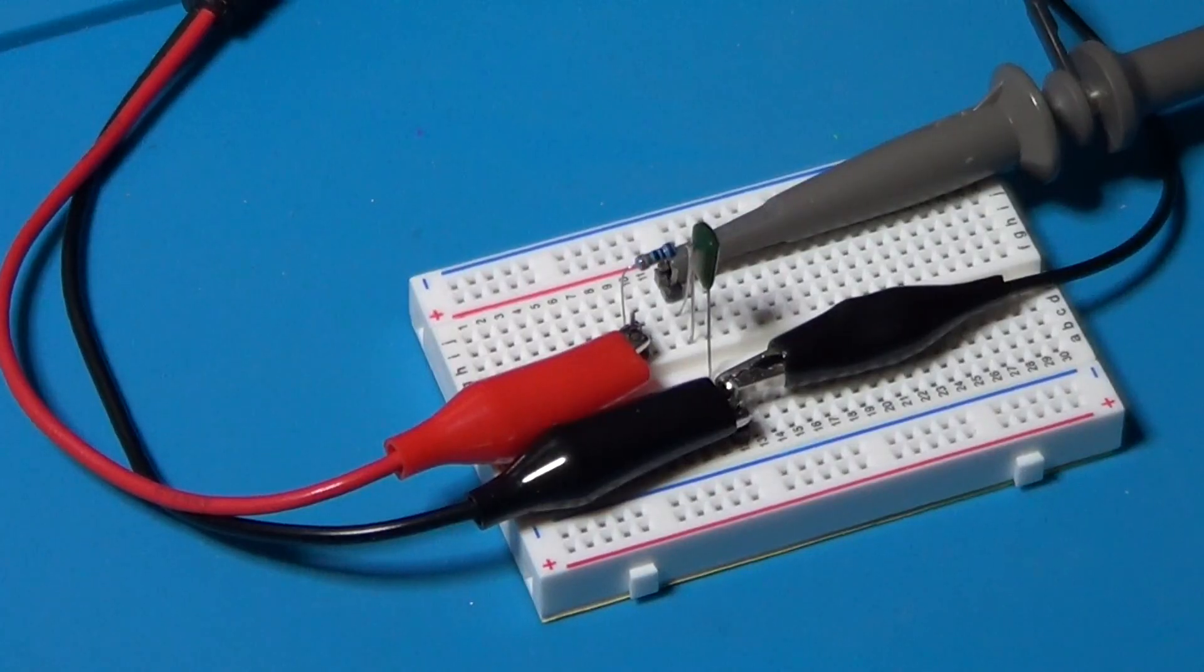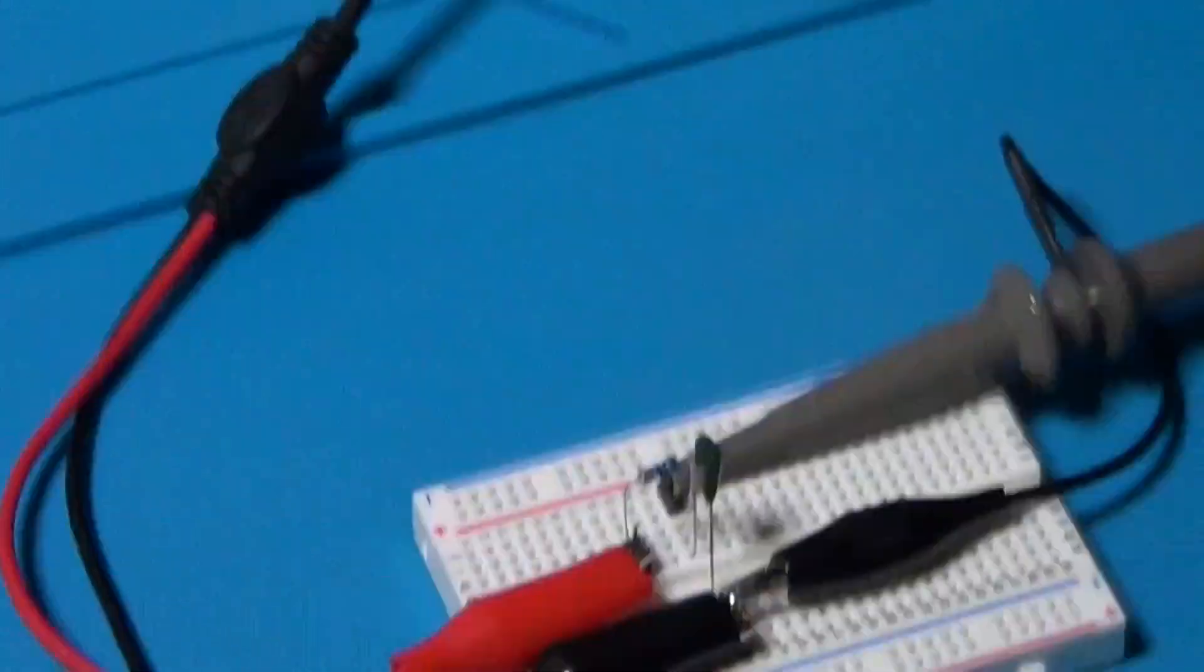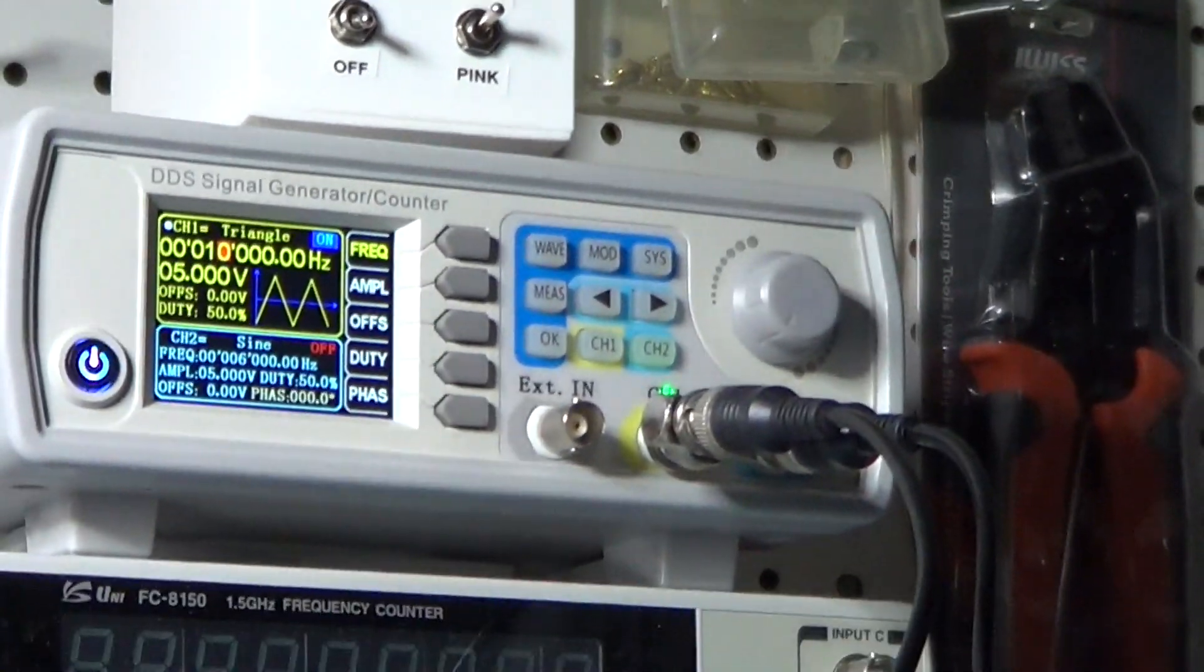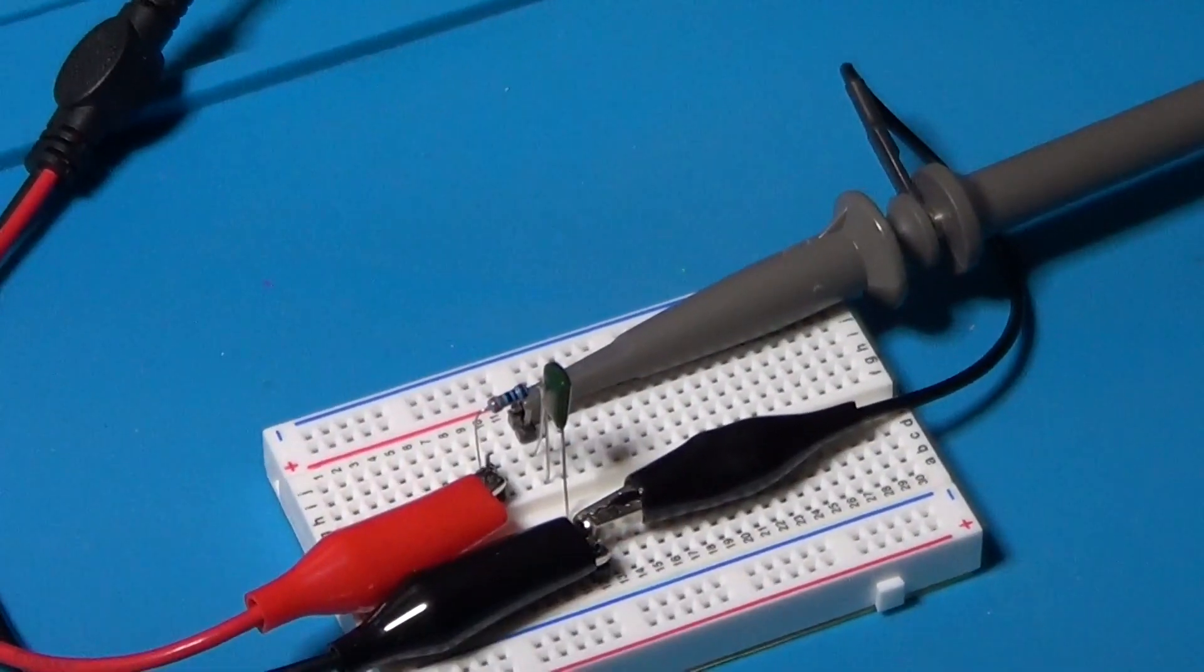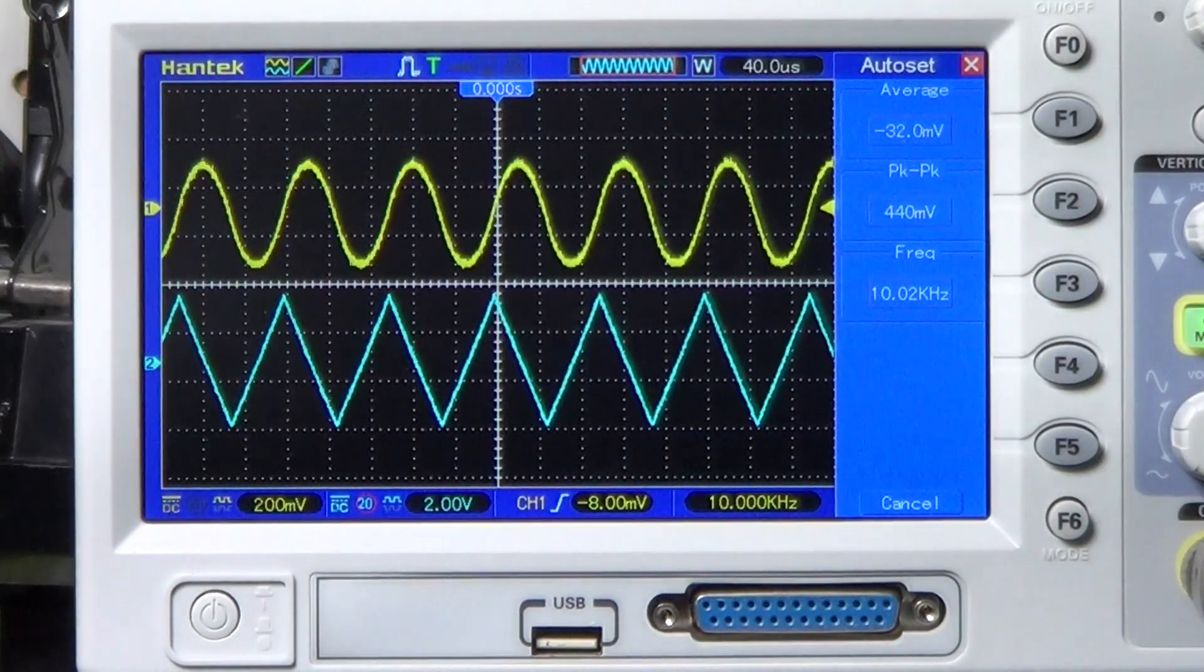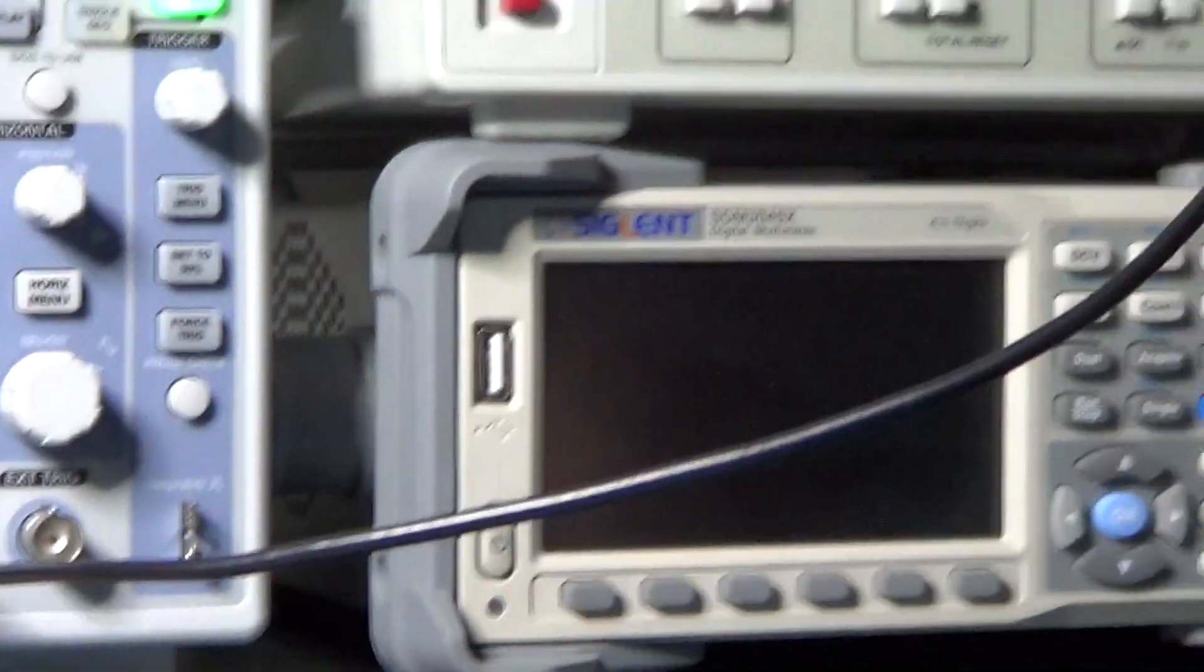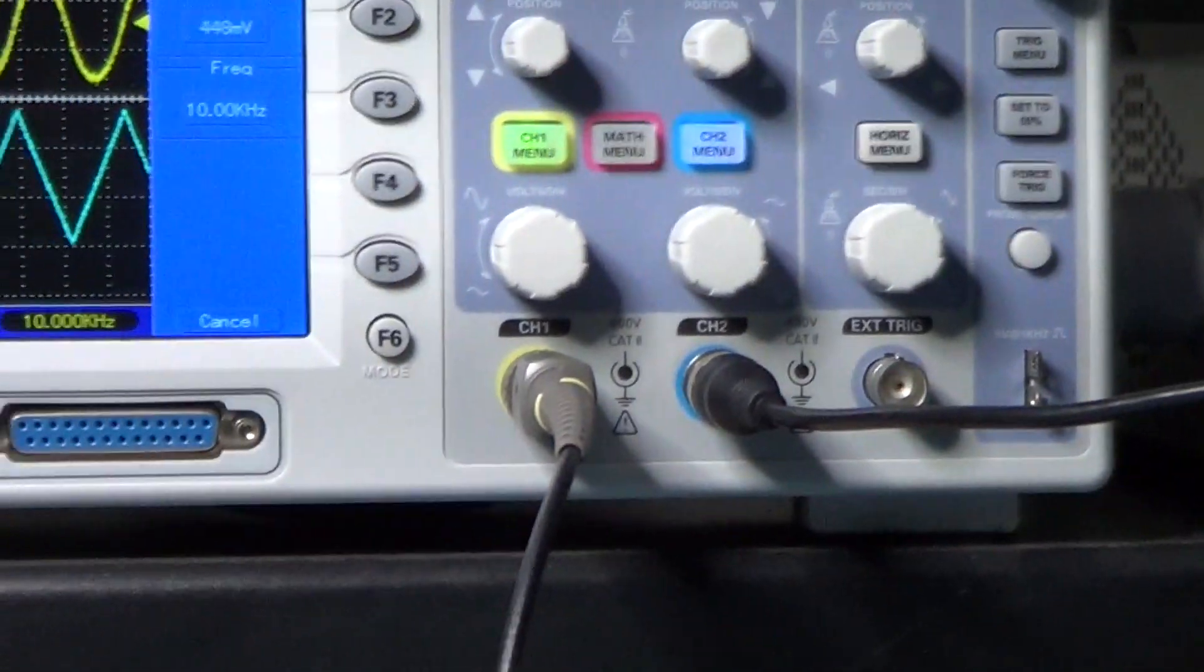I have also connected the function generator to the input of the filter, which is currently providing a triangular wave at 10kHz, 10 times higher than the filter cutoff frequency. The output is instead connected to the first channel of the oscilloscope, visible on the screen in yellow. The blue signal is the one coming from the function generator, and added to the input of the filter, so that we can watch both signals at the same time.